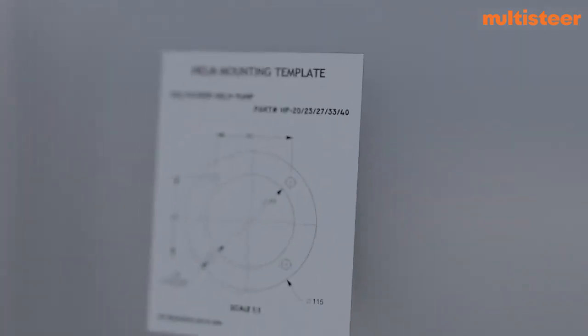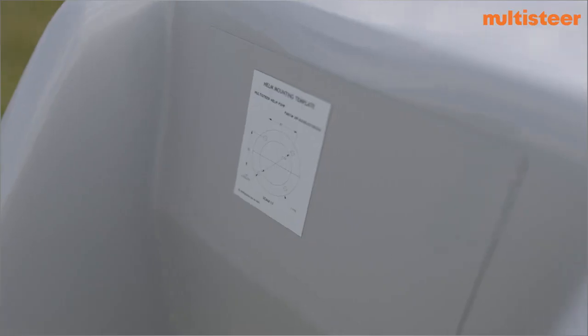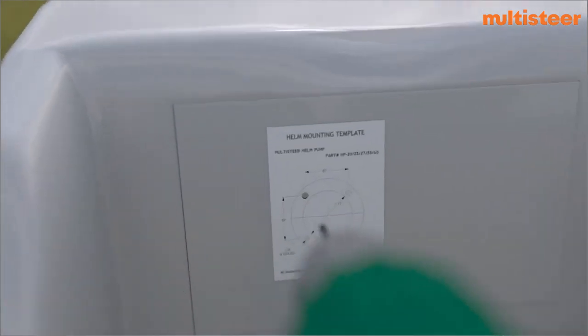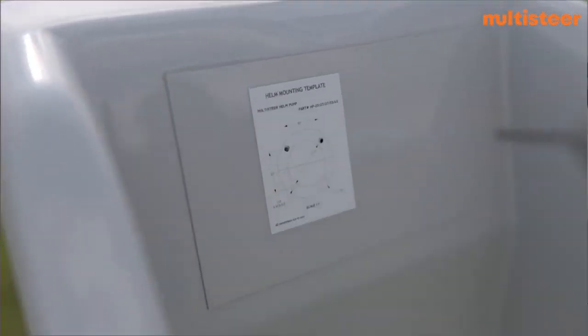Place the helm mounting template supplied with the installation manual on the dashboard where the helm is to be mounted. Drill four small holes and one big hole in the center as per the template.